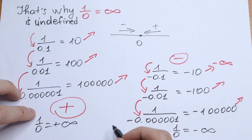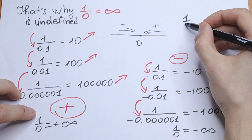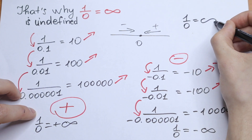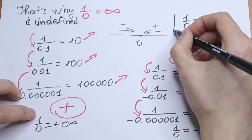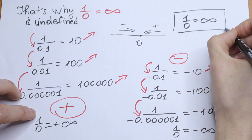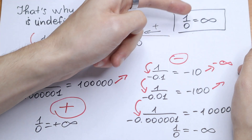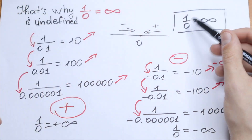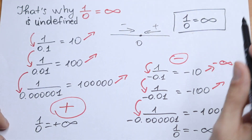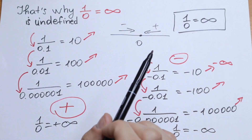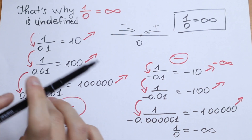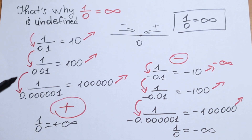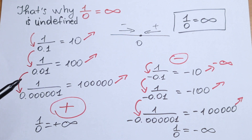So our final answer is that 1 over 0 is equal to infinity — which says that dividing 1 by 0 gives us an undefined answer. We don't know what value it represents. This is my explanation. If you agree or disagree, write your explanation or question in the comments. Thank you so much for watching, and see you in the next videos.